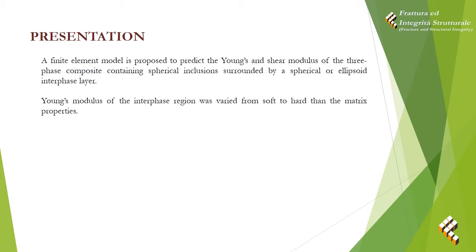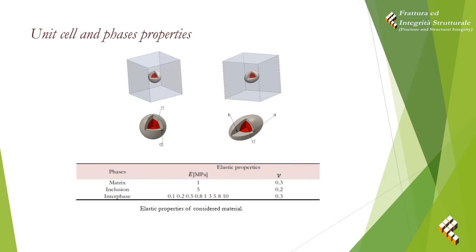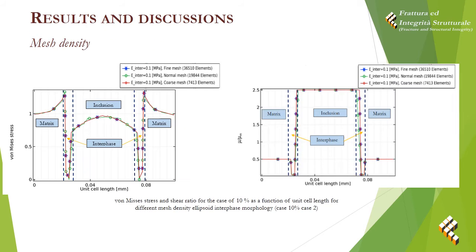The Young's Modulus of the interface region was varied from soft to hard relative to the matrix property. In our case, the composite material is taken as a periodic array of repetitive unit cells constructed with uniform distribution of the same morphology for the reinforcing phase. All components are considered isotropic, meaning that the combination in the unit cells generates a composite with isotropic behavior.